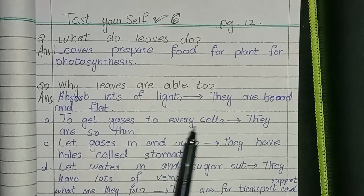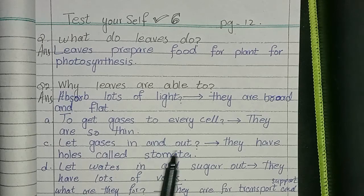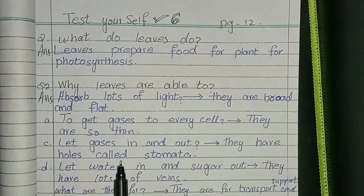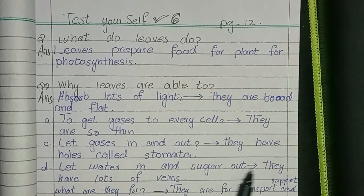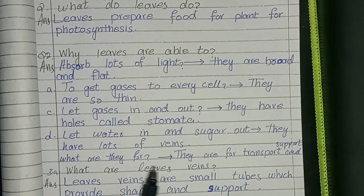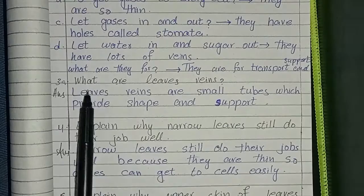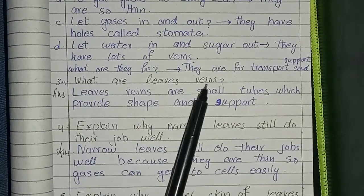To get gases to every cell, leaves are so thin that gases can move in and out easily. They have holes called stomata to let water and sugar in and out. They also have lots of veins for transport and support. What are leaf veins for?